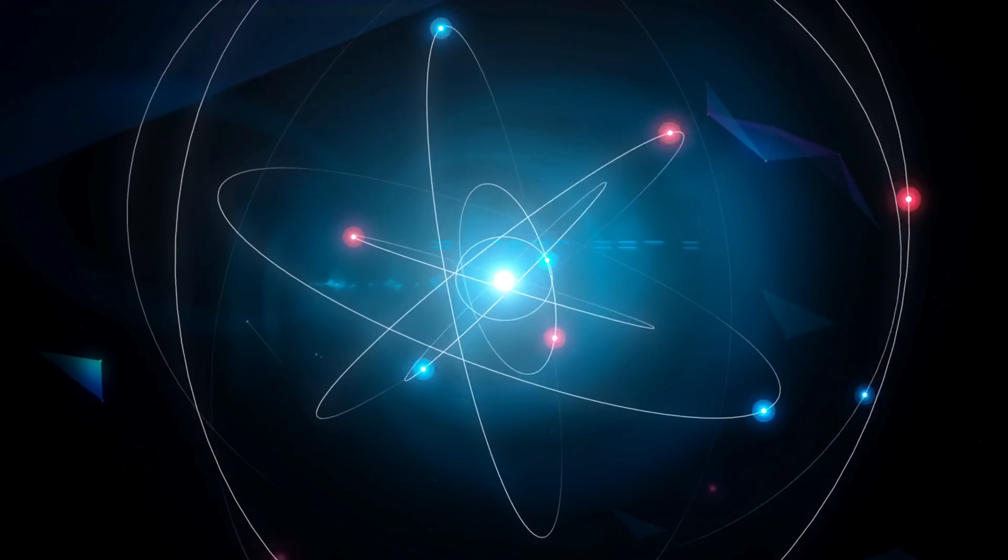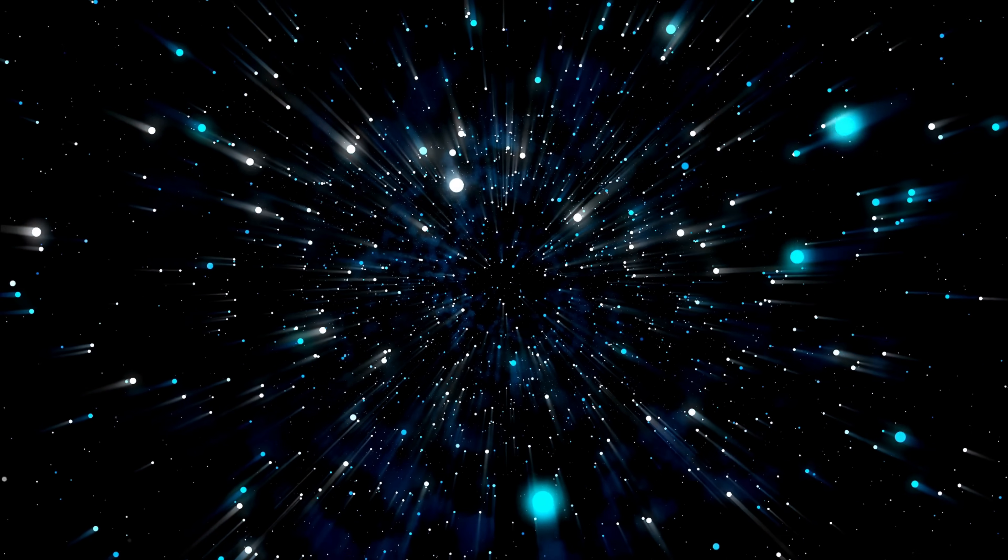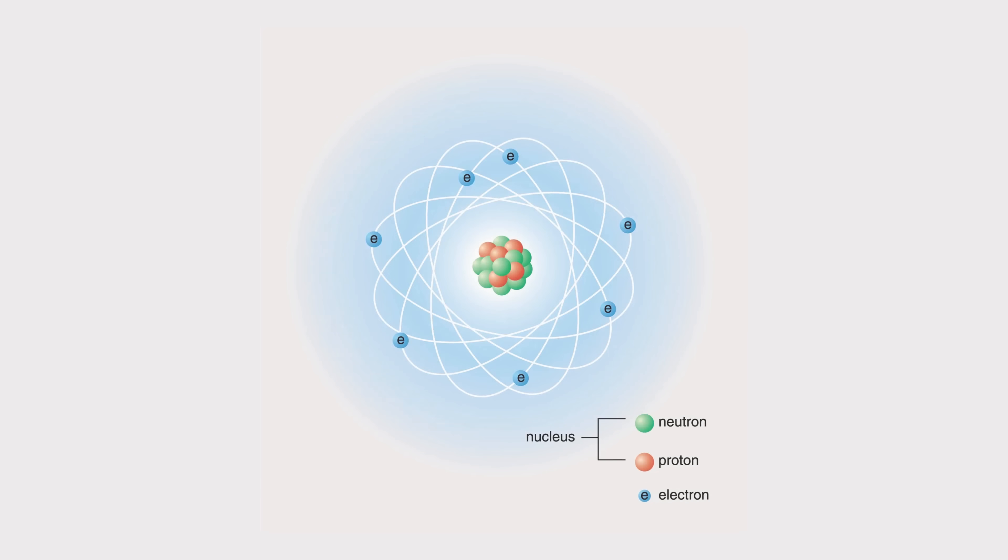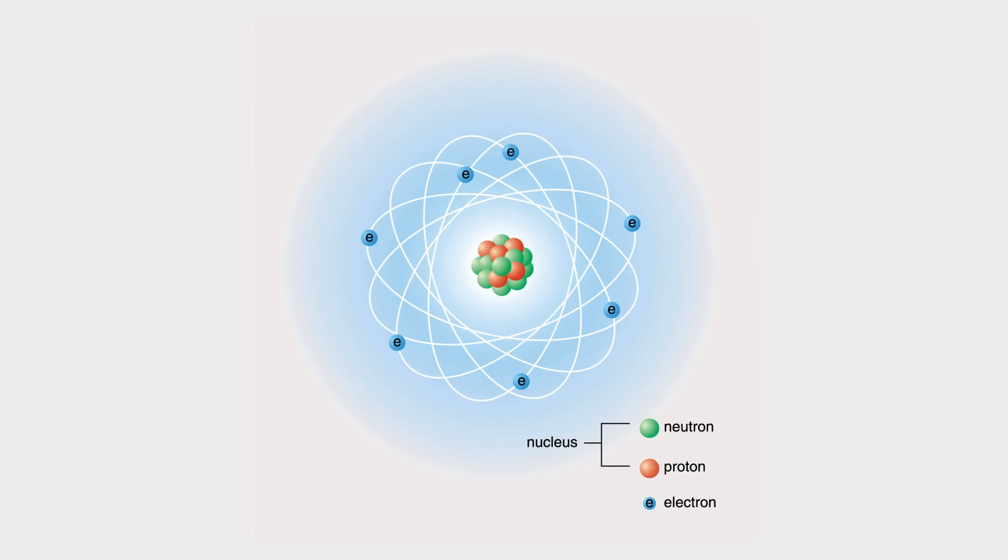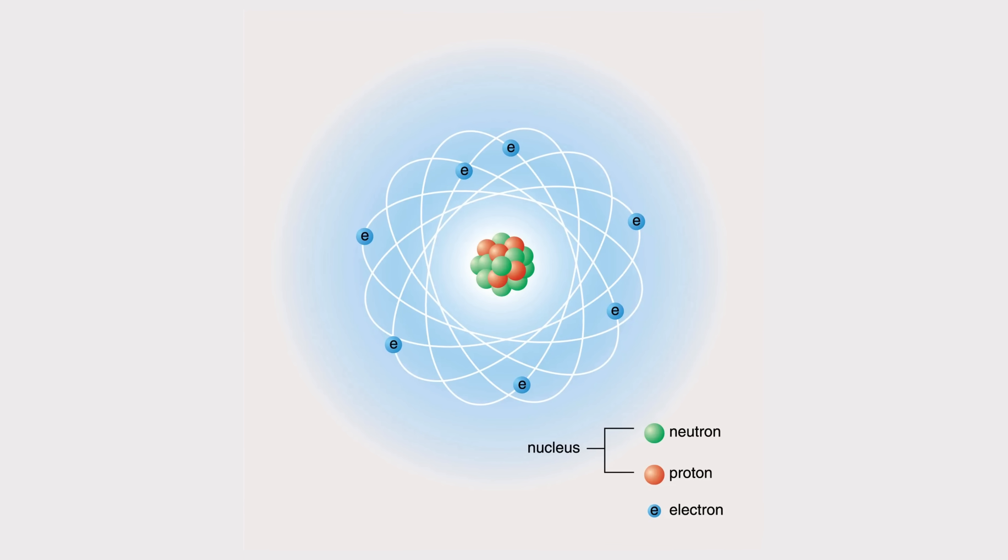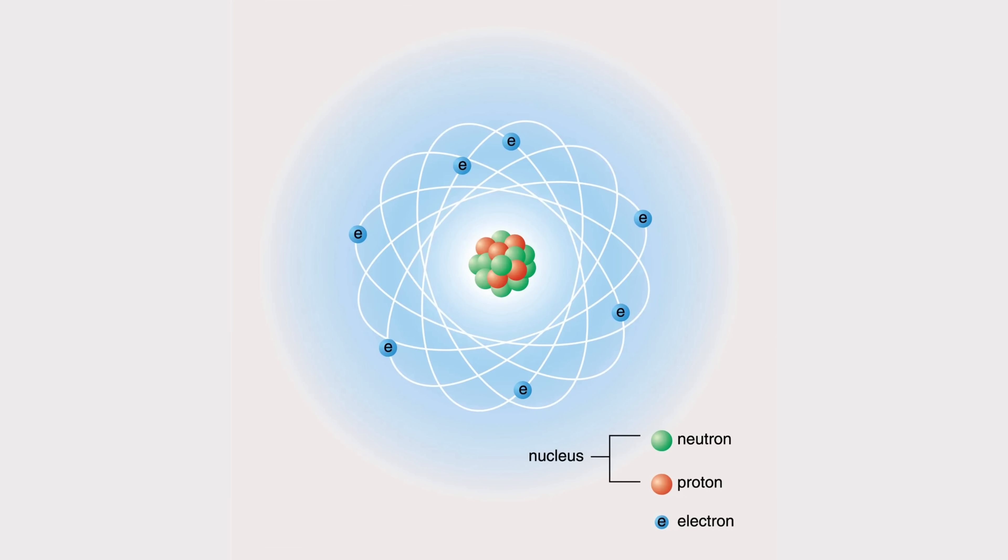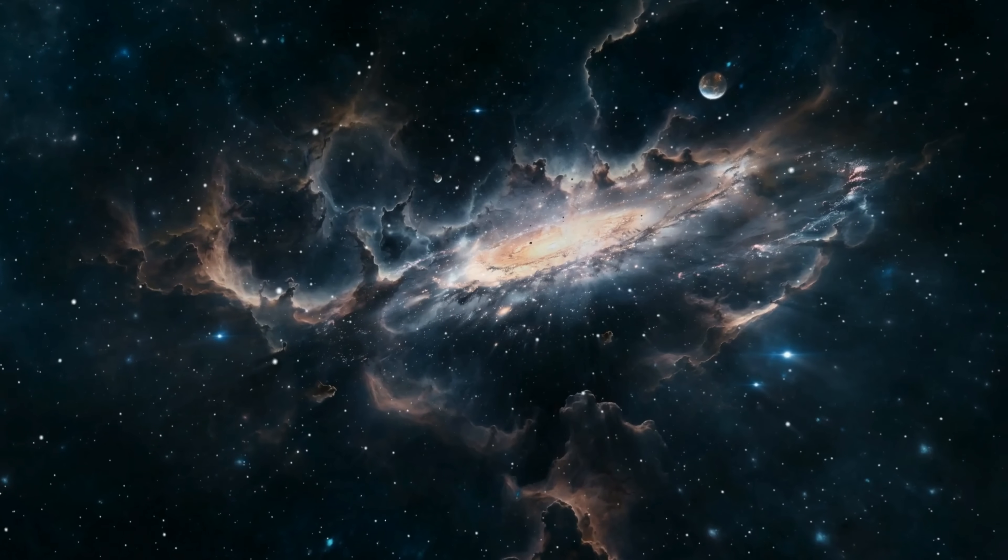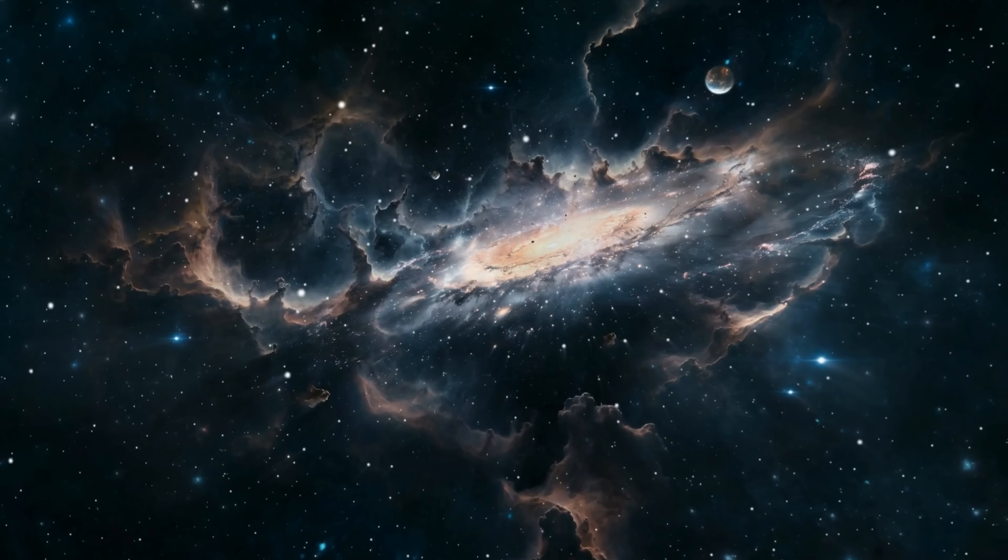Quantum mechanics has forced us to rethink everything we thought we knew about the microscopic world. At the heart of this transformation is our understanding of the atom itself. Classical physics painted a picture of electrons orbiting the nucleus, much like planets around a sun, an orderly, predictable system. But as scientists dug deeper, this picture started to crack.